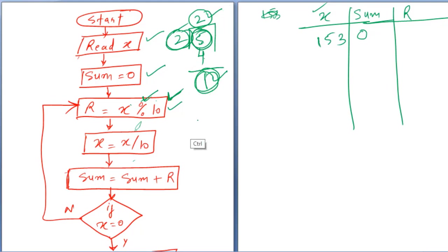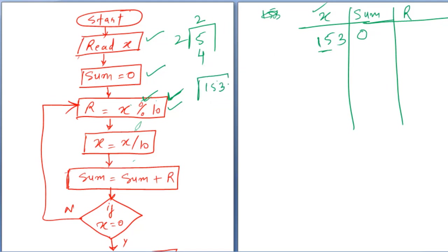So x percent 10 — x is 153, percent 10. We have to find 153 divided by 10 and take the remainder. 10 times 15 is 150, so the remainder is 3. So 3 will be assigned to R. I will write 3 here in R.